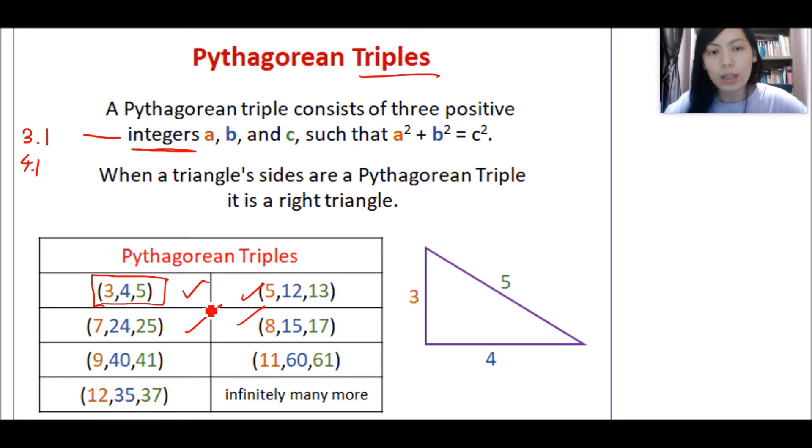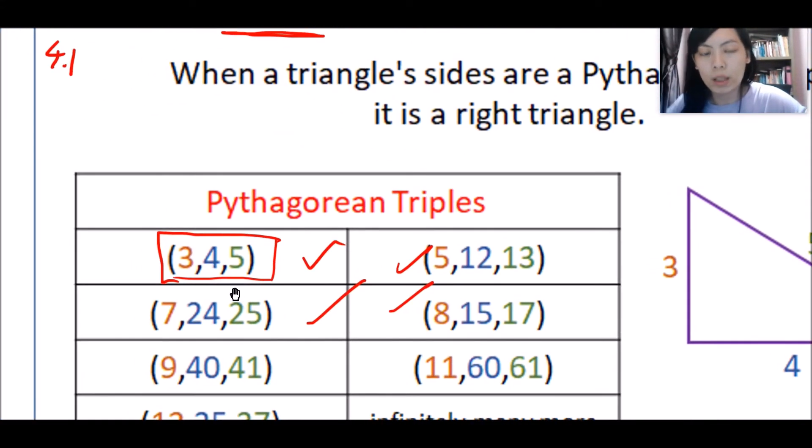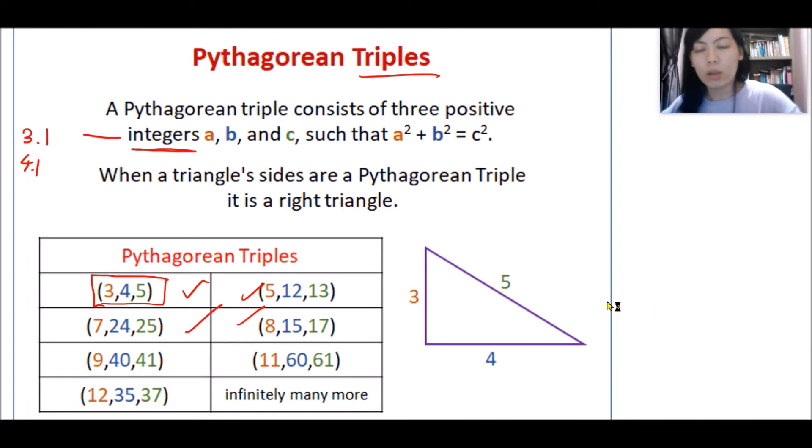So now, I would like you to look at these four groups of triples here: 3, 4, 5; 5, 12, 13; 7, 24, 25; 8, 15, 17. What does it mean? There are actually a lot of triples, but the first four triples here are the most common ones.